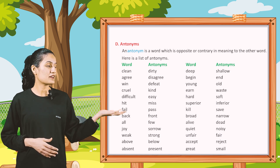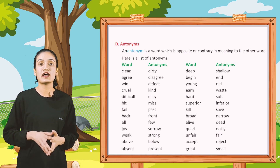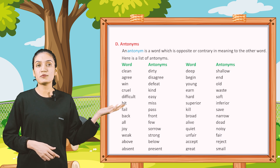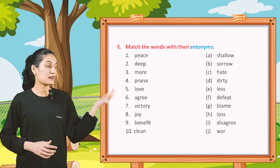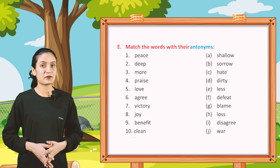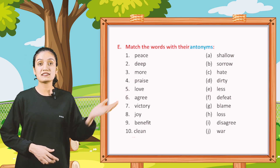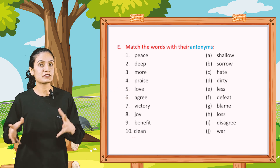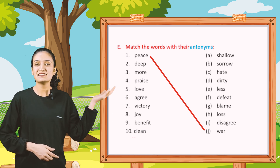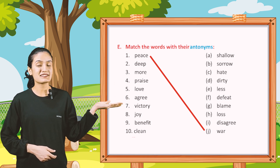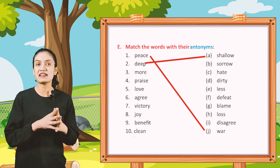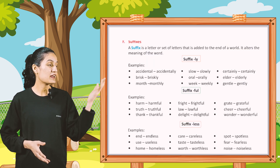So you can see the antonyms. Now kids, read all the antonyms and must remember them. Now part E. Match the words with their antonyms. First: Peace — its antonym will be J, War. Second: Deep — match it with A, Shallow. So in this way match the words with their antonyms.